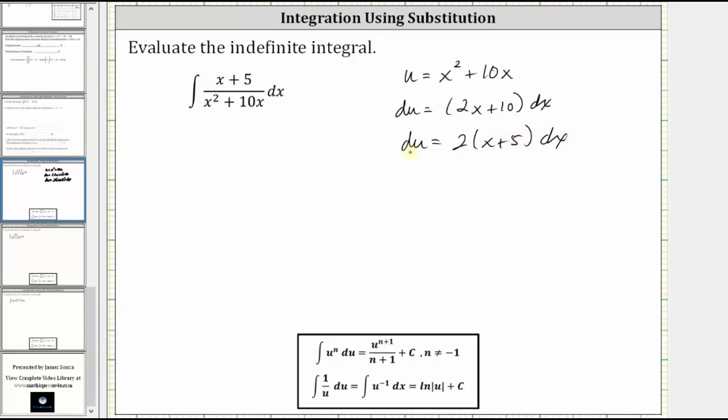Now if we divide both sides by two, we will just have the quantity x plus five times dx. So we'll divide both sides by two, which gives us one half differential u is equal to the quantity x plus five dx.